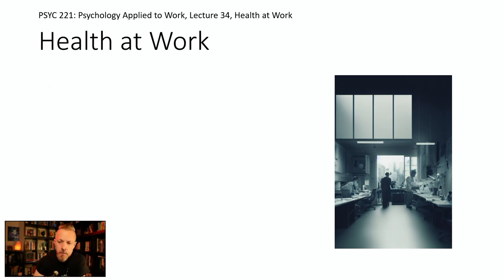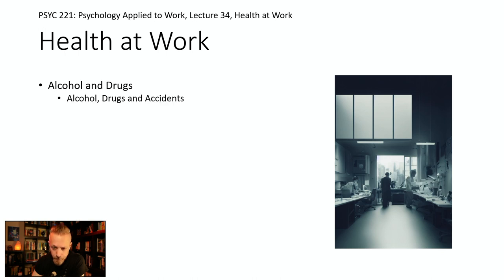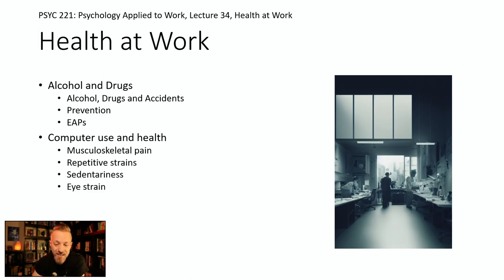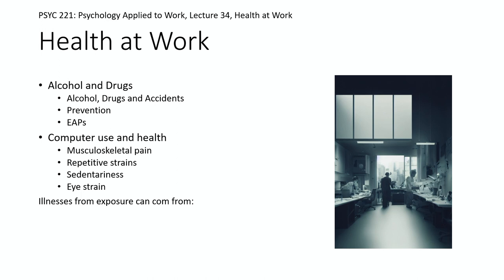Getting into health at work, specifically alcohol and drugs — alcohol, drugs, and accidents and their prevention. We'll also talk about employee assistance programs. When we talk about computer use and health, we'll cover musculoskeletal pain, repetitive strains, sedentariness, and eye strain. When we talk about exposure, we'll cover illnesses that can come from toxins, injuries from exposures that can take a long time, and the role of the EPA.